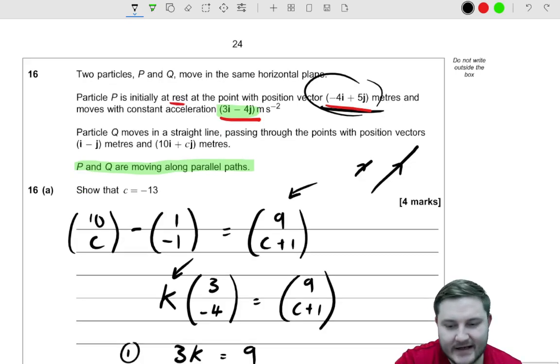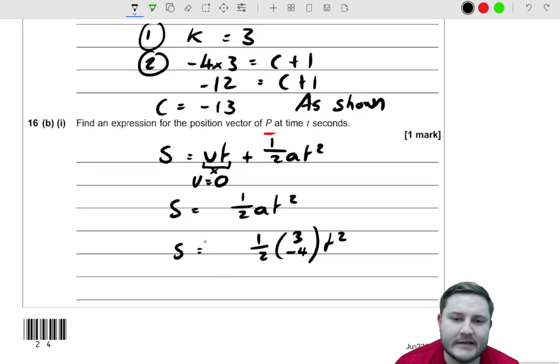It doesn't start at the origin. It starts at (-4, 5). So we actually need to add that on to the start.